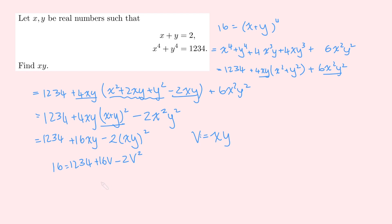So if we bring everything to one side, so maybe I'll bring everything to the left side, I get 2v squared minus 16v minus 1218 equals 0. And then the next natural thing to do is to divide by 2. So you get v squared minus 8v minus 609 equals 0. And now we're just left with a very simple, in inverted commas, quadratic to deal with.